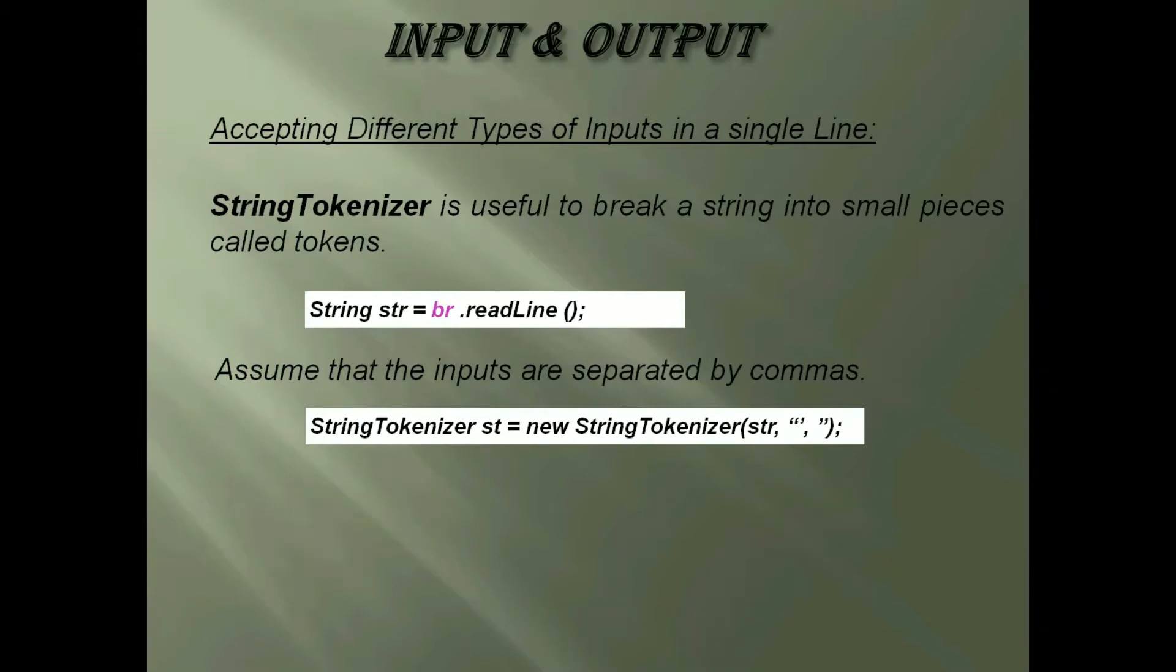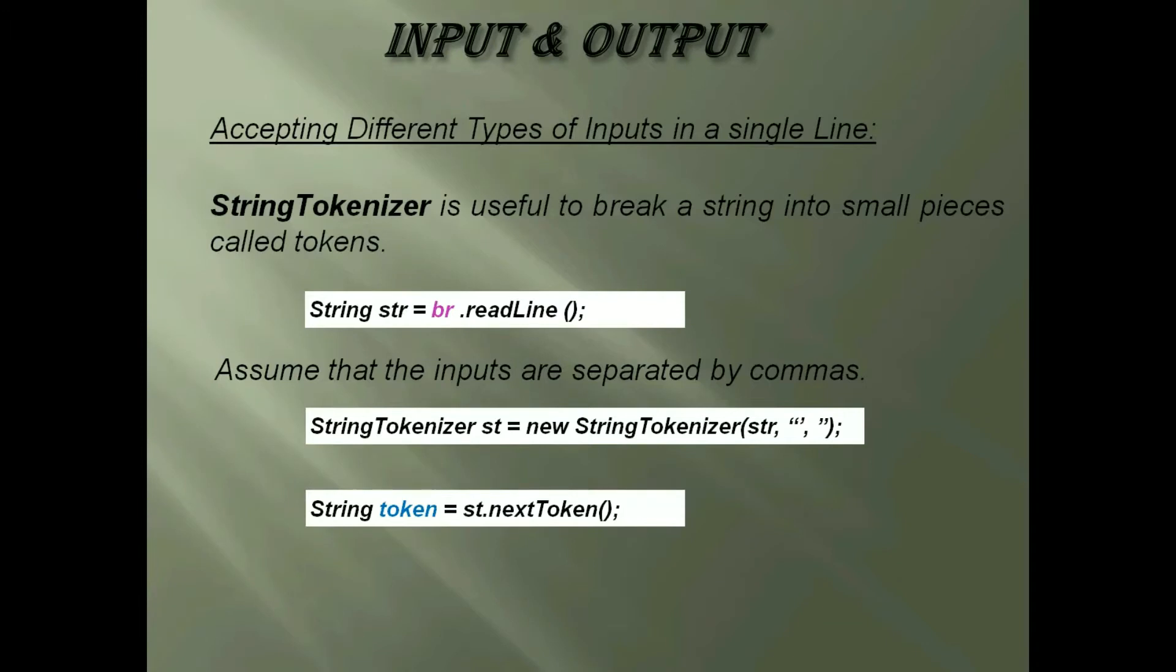Then we will collect the individual tokens from the string using nextToken method of StringTokenizer class in this way: String token equal st dot nextToken. Now we have tokens.